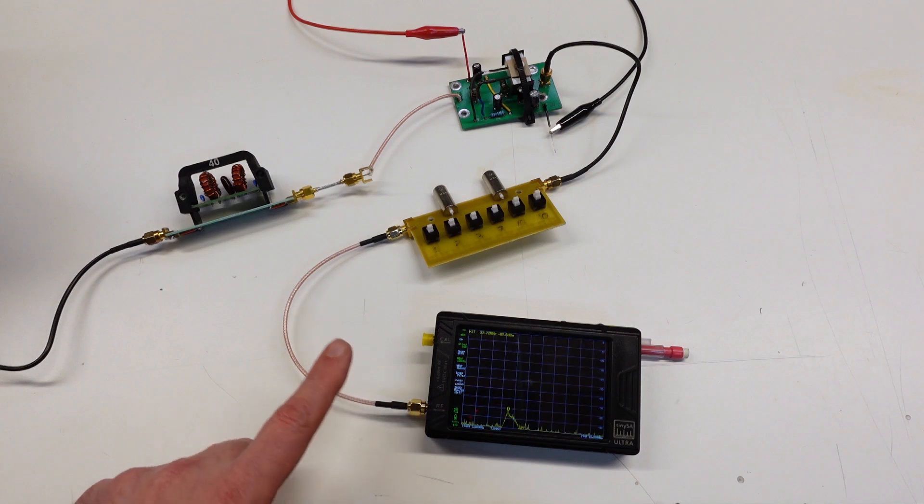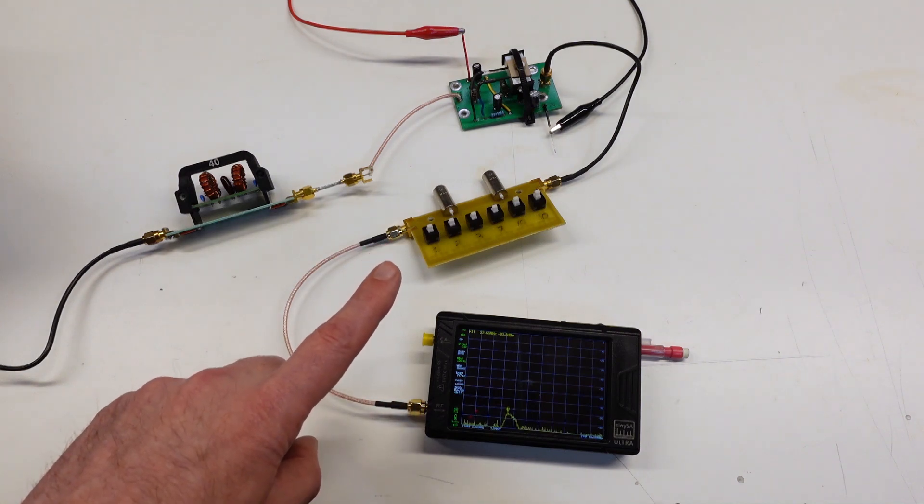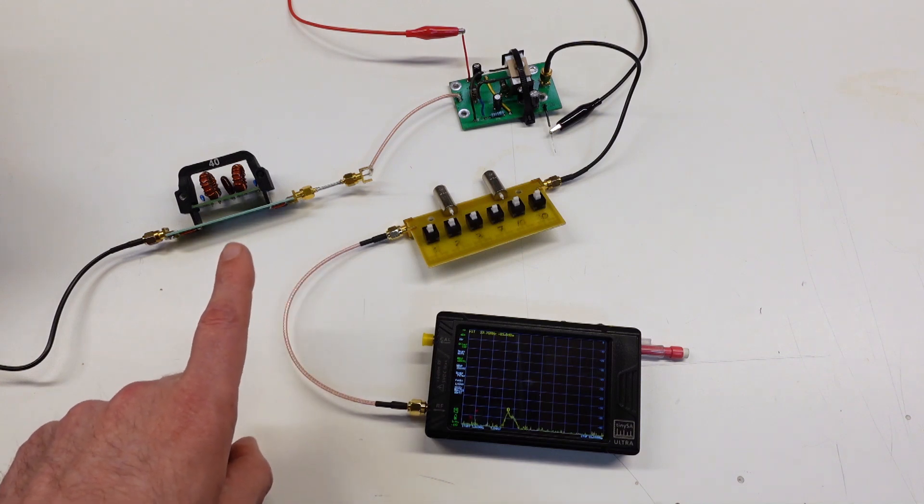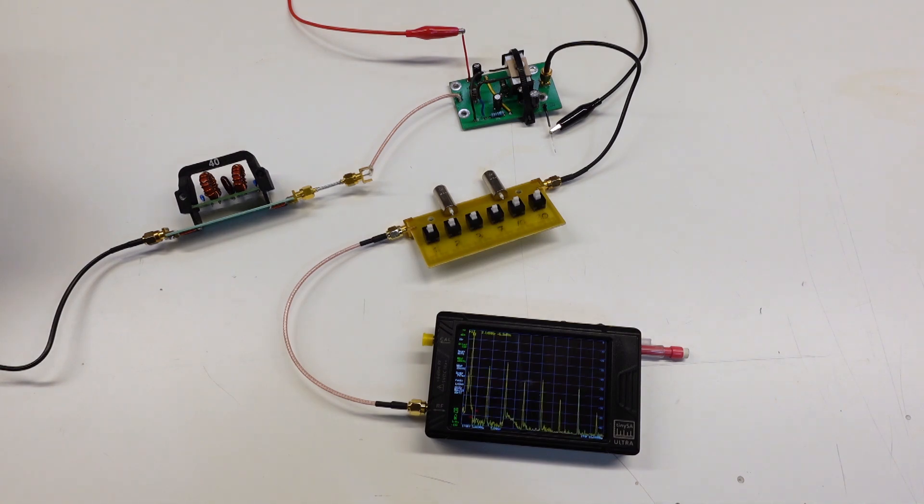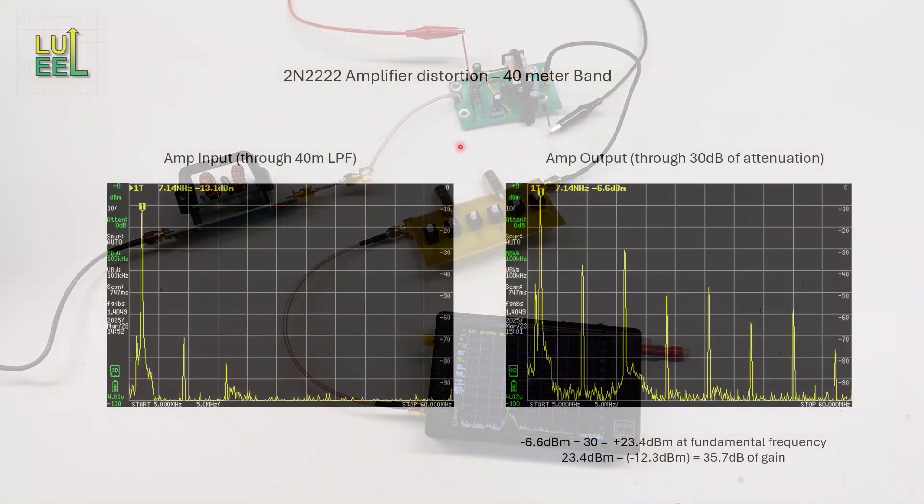The second parameter I want to improve is distortion. I've changed the setup - I've got my tinySA connected to the amplifier output through my step attenuator set to 30 dB of attenuation. Now it's very important that I have this low pass filter here to knock down any spurs from the signal generator. Still at minus 12 dBm input, I can turn it on and we can see the SA screen light up with all these disturbing-looking spurs everywhere.